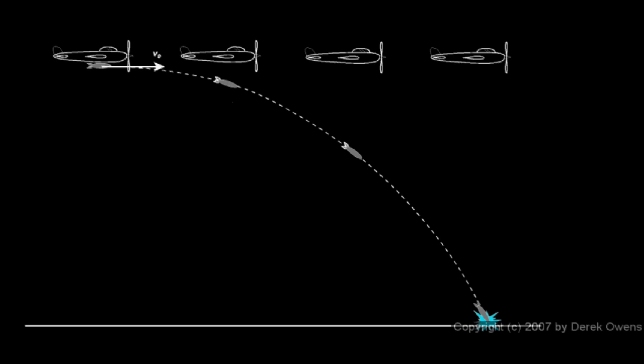So the bombardier has to take into account the forward motion of the plane and its height above the ground, and release the bomb a certain horizontal distance before it gets to the target, such that by the time it falls that distance to the ground, it has moved forward that distance and hits the target. And exactly how far in advance of the target the bomb needs to be released is a projectile motion problem.